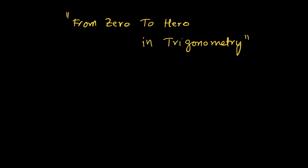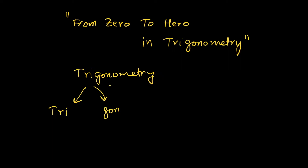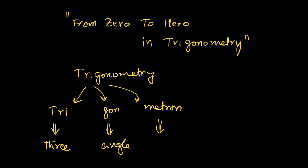The word trigonometry is actually derived from three Greek words: 'tri', 'gon', and 'metron'. 'Tri' means three, 'gon' means angle, and 'metron' means measure.